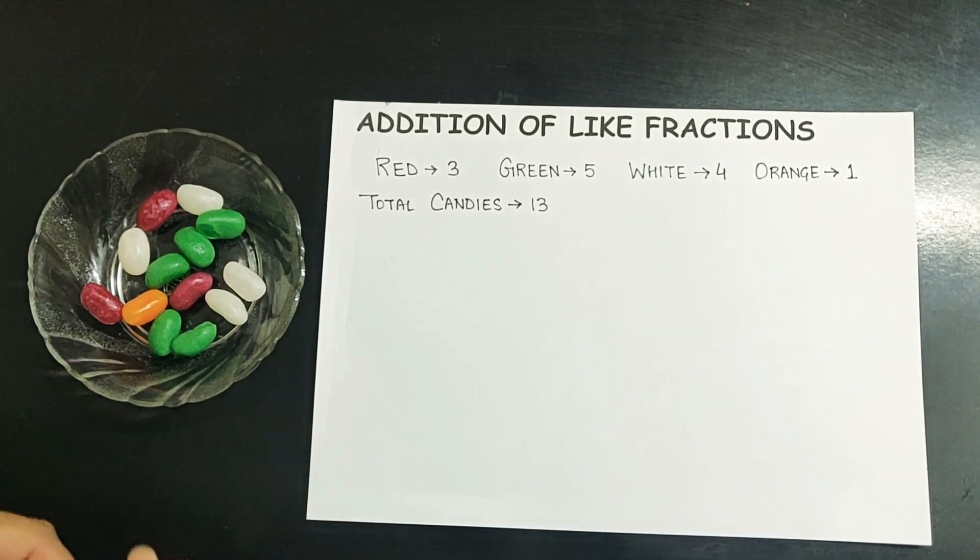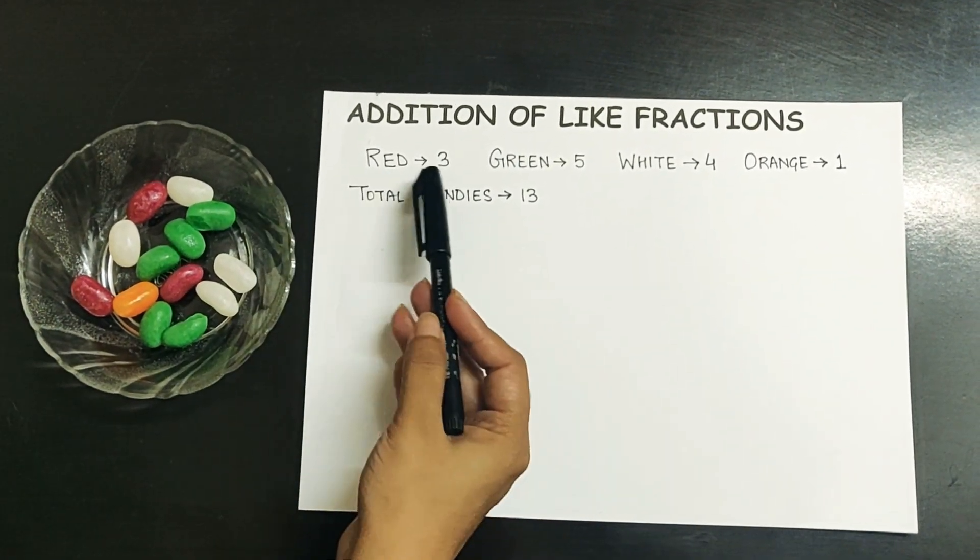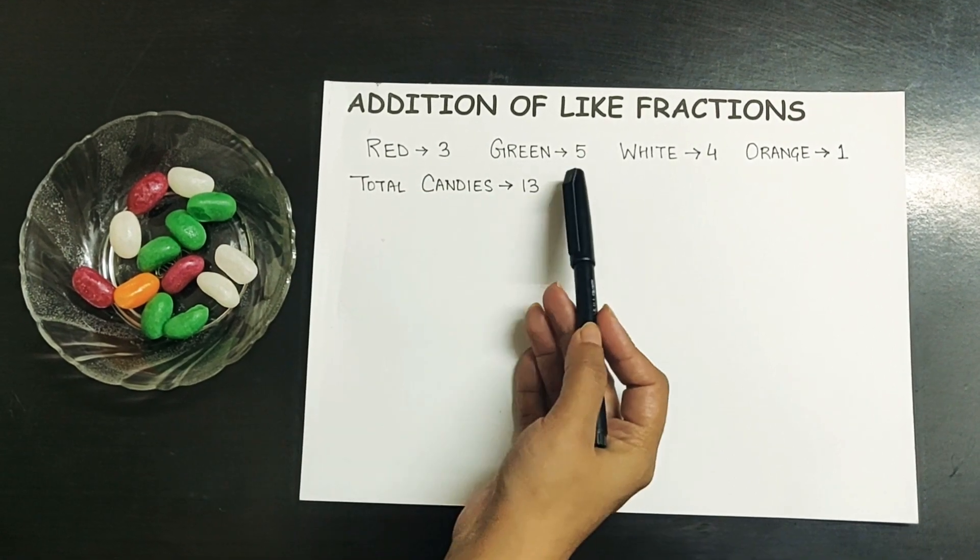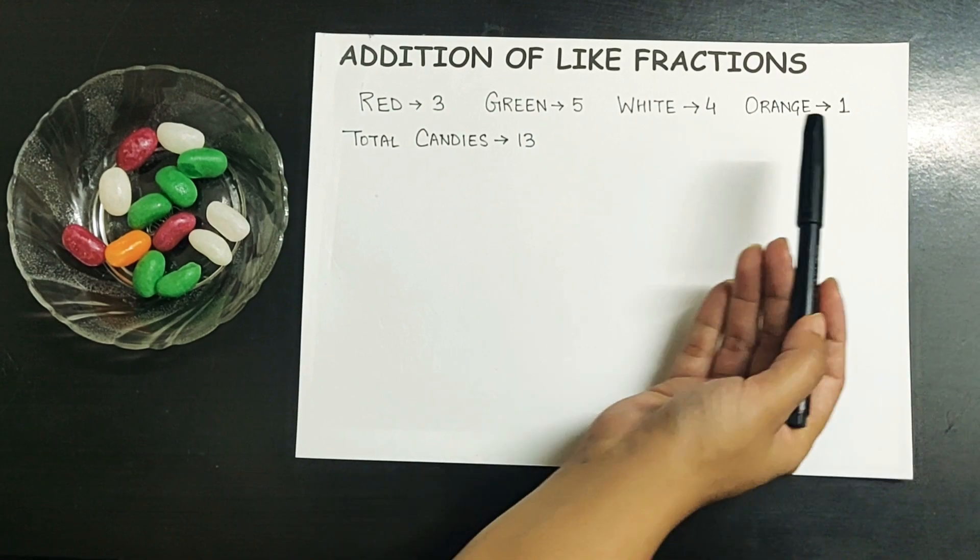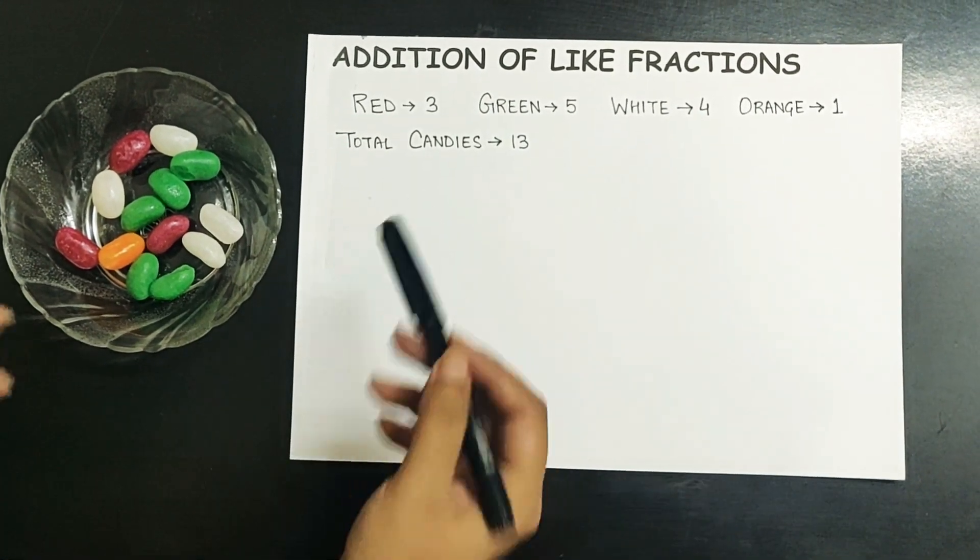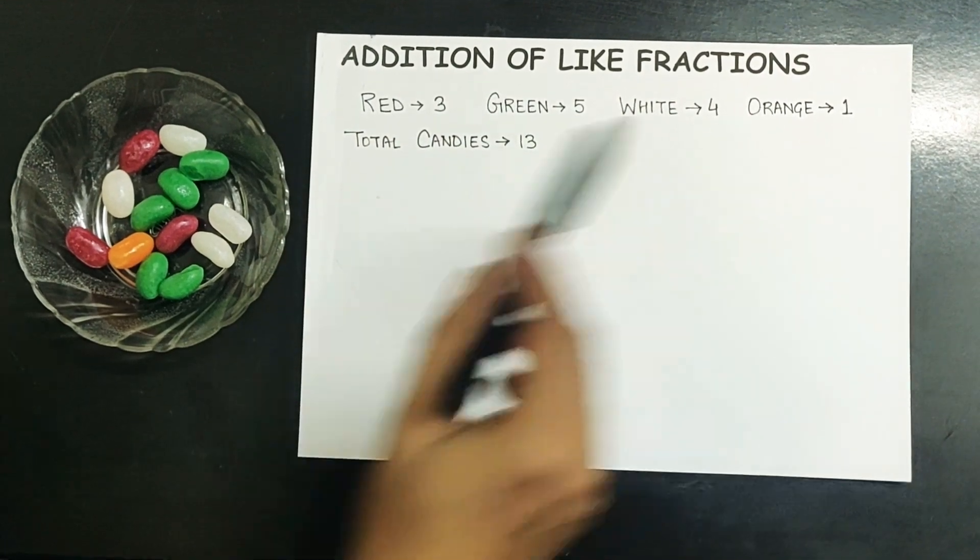The candies are of different colors. We have already marked there are three red candies, five green candies you can see here in the bowl, four white candies, and one orange candy. The total number of candies is 13. This is the number of candies of particular colors.